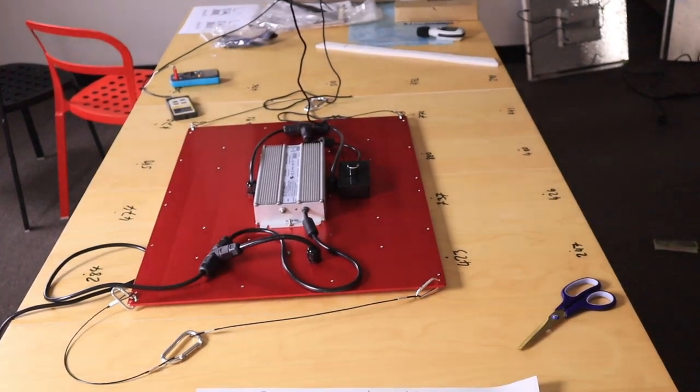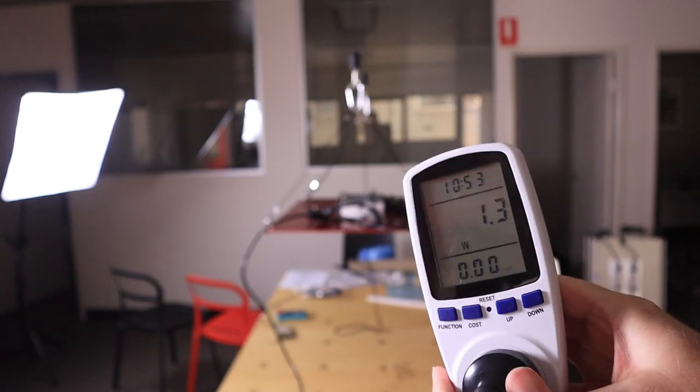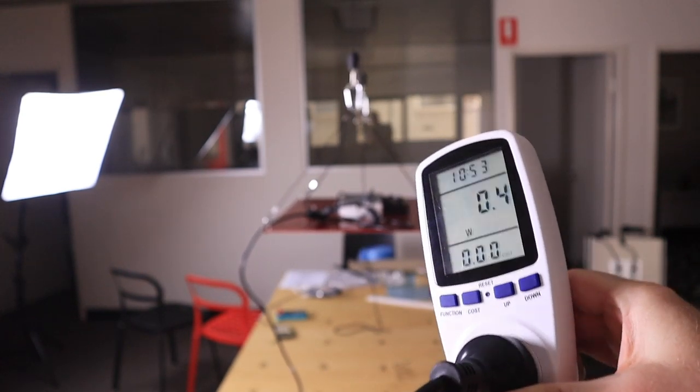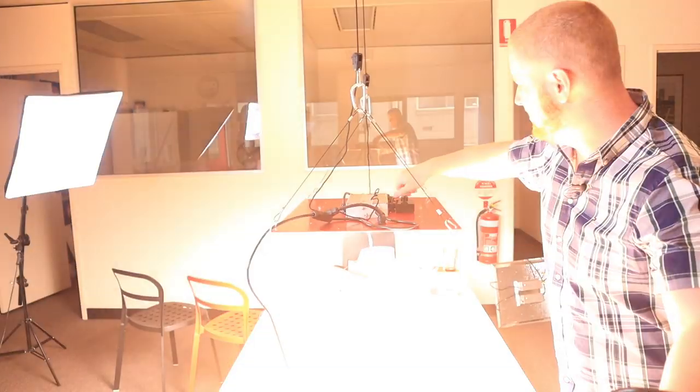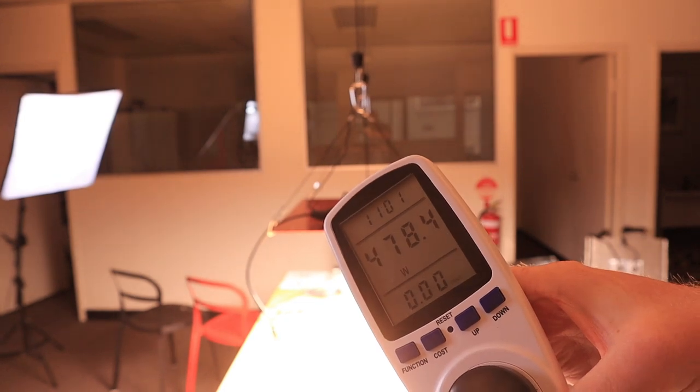Next up, the HLG. Electricity consumption first. It draws nothing. Well, that's because the dimmer is all the way down. So I crank it up. And it pulls 478.4 watts.